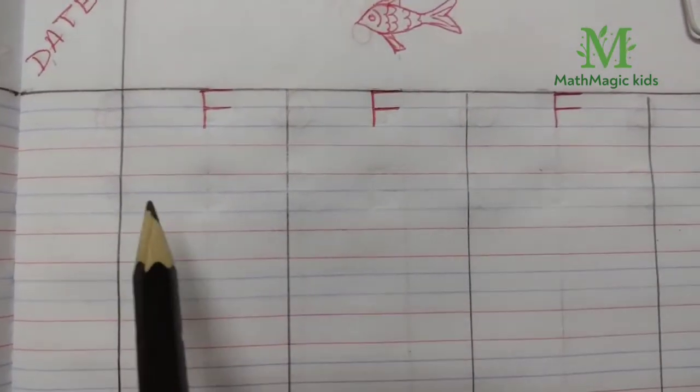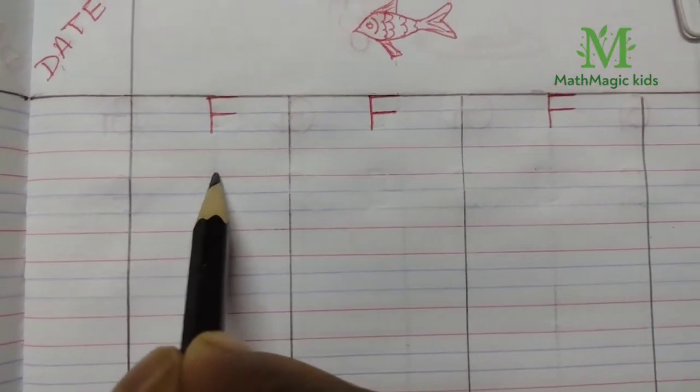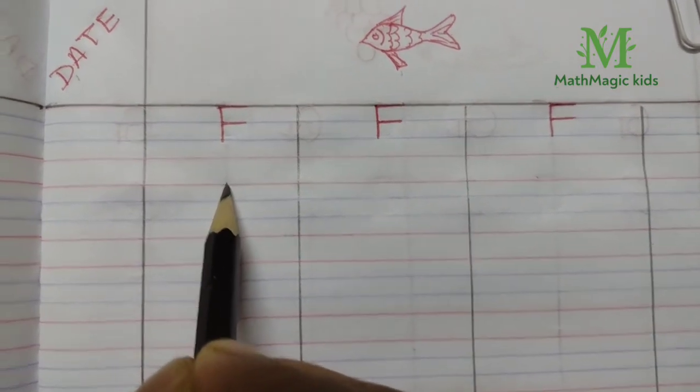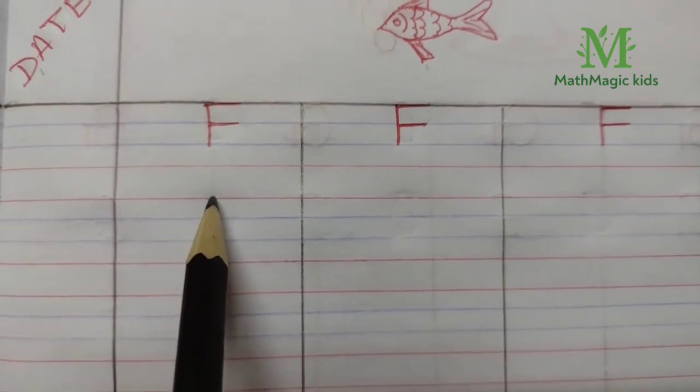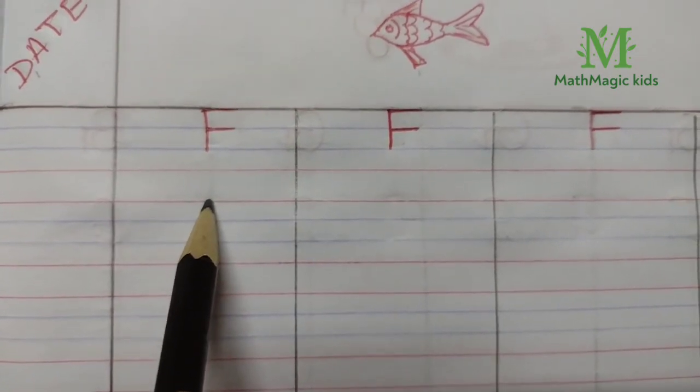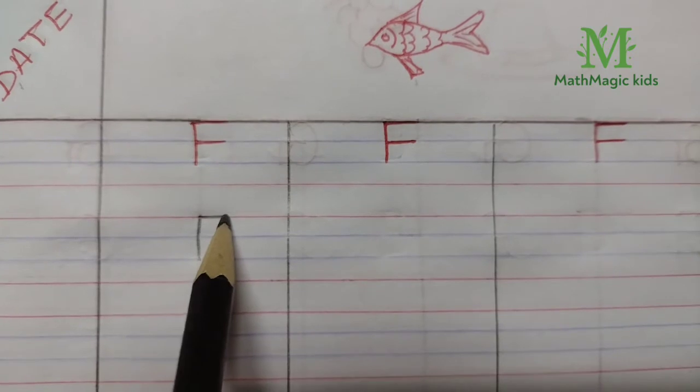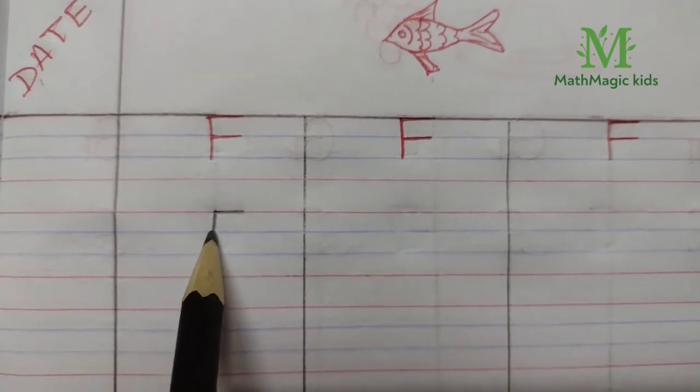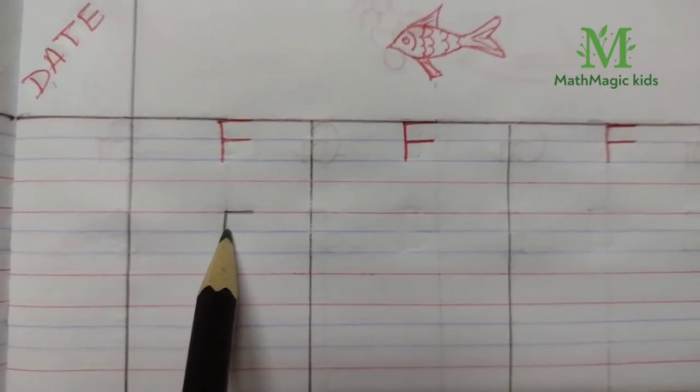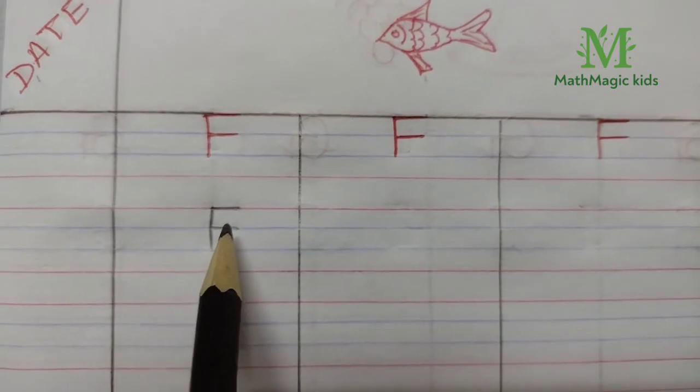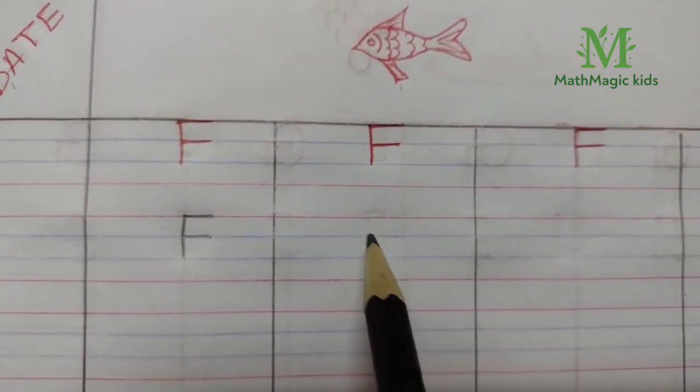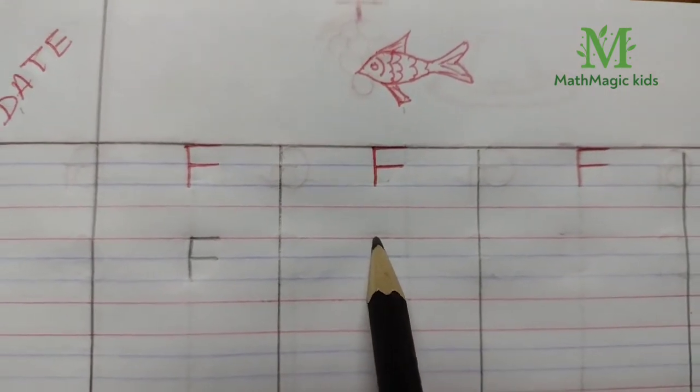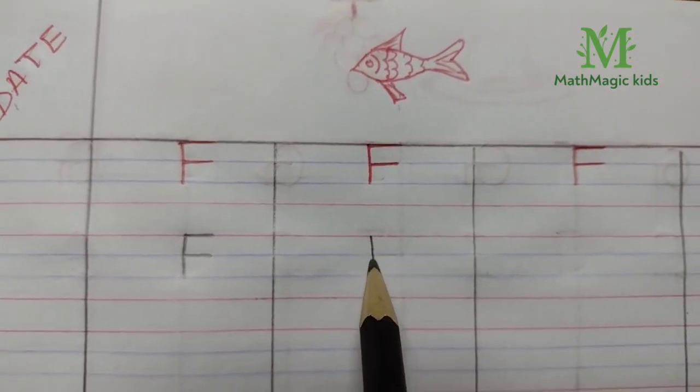To write F, first we draw a standing line from first red line till second blue line like this. Now draw a small sleeping line on first red line, then again another sleeping line on first blue line like this. This is how we write F.